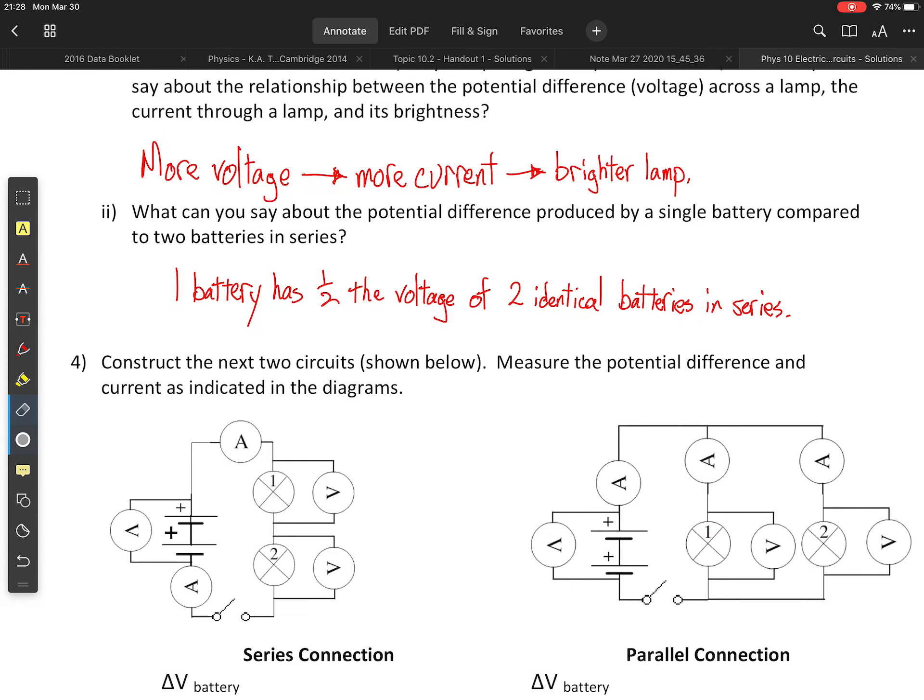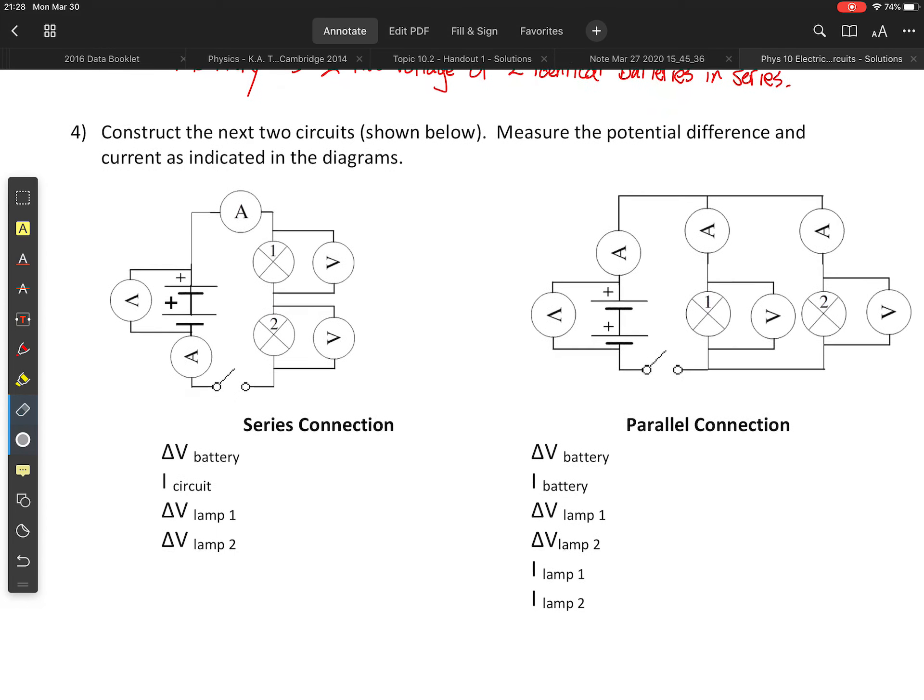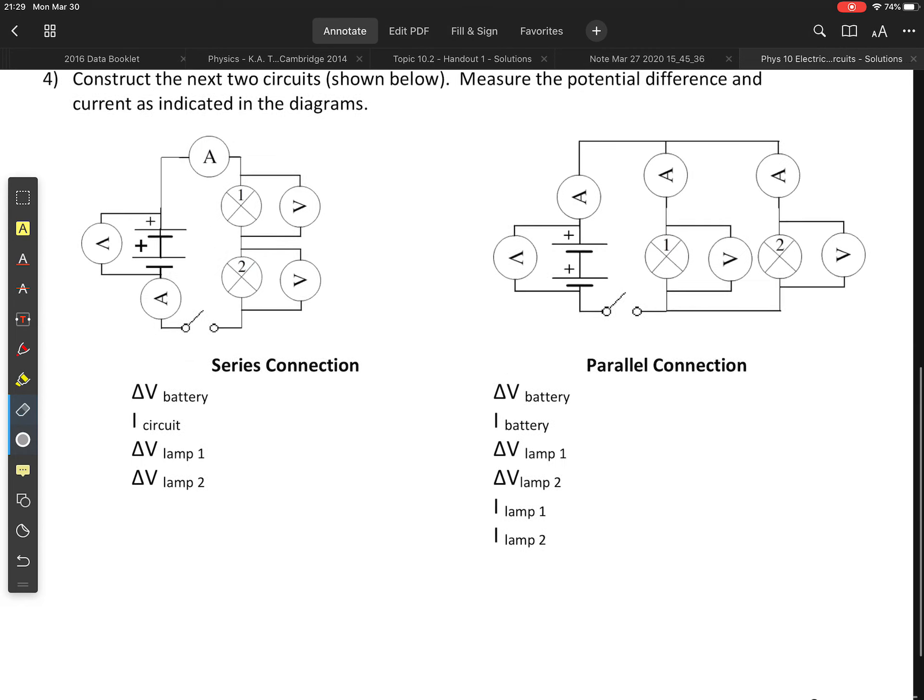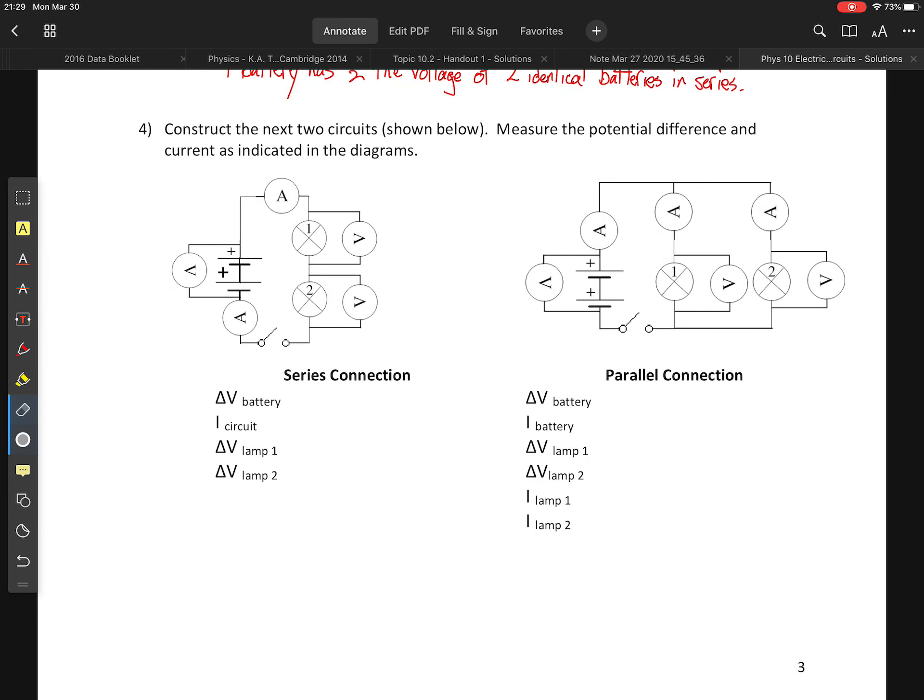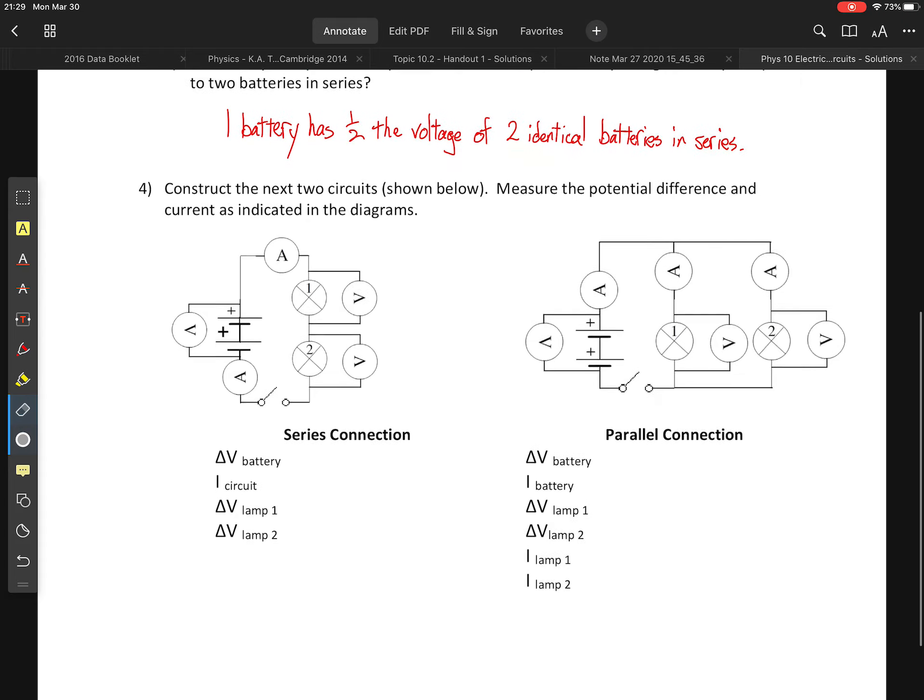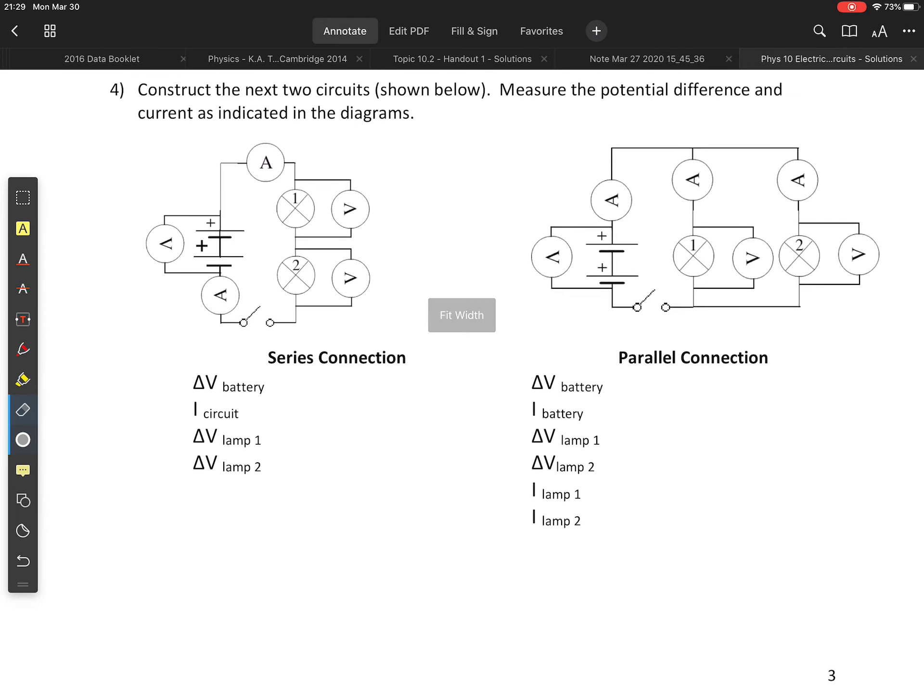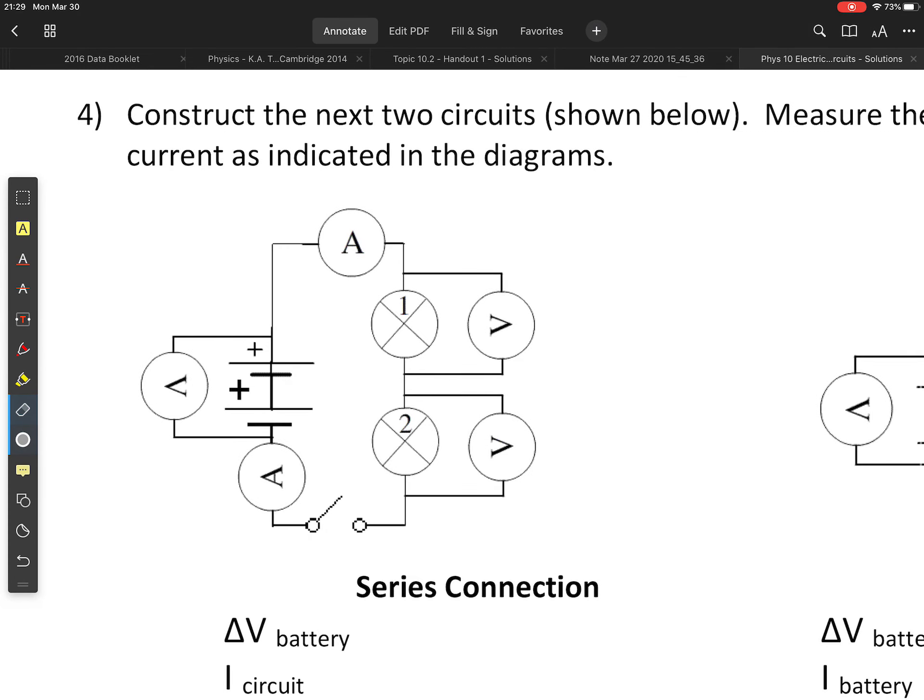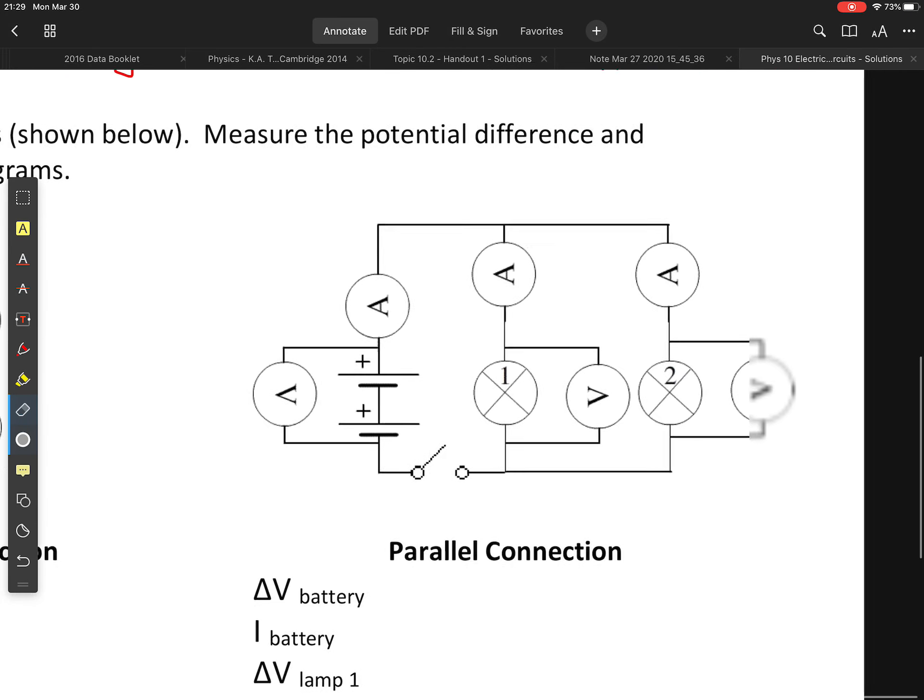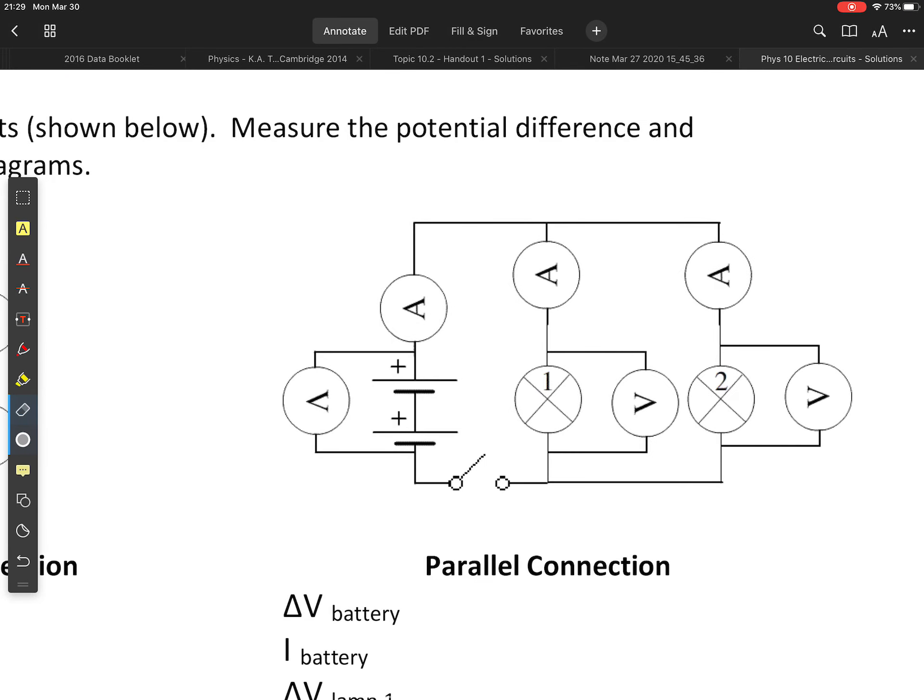Note that if we put our batteries in parallel, things get a little trickier, but we are not going to worry about that for right now. Although, you can always try it in the simulator if you want to. Okay, you are now asked to construct these two circuits, where we have a series circuit with two bulbs in series, and we have a parallel circuit with two bulbs in parallel.